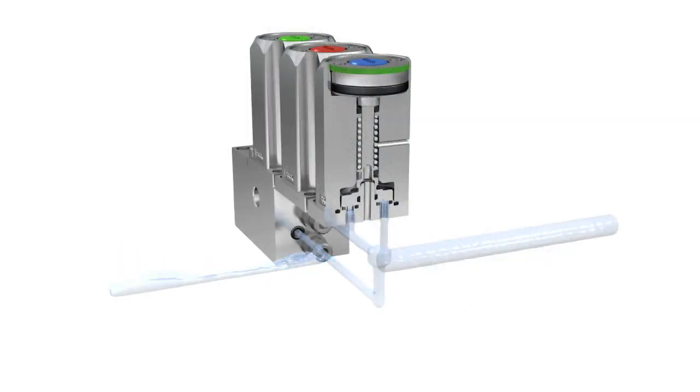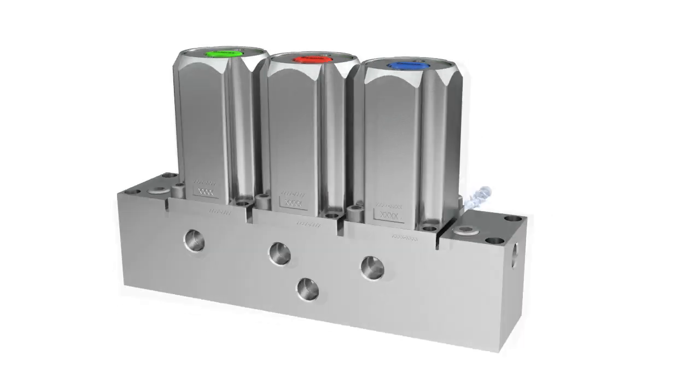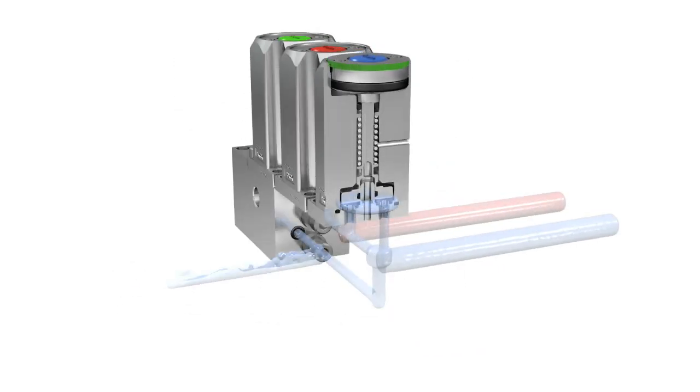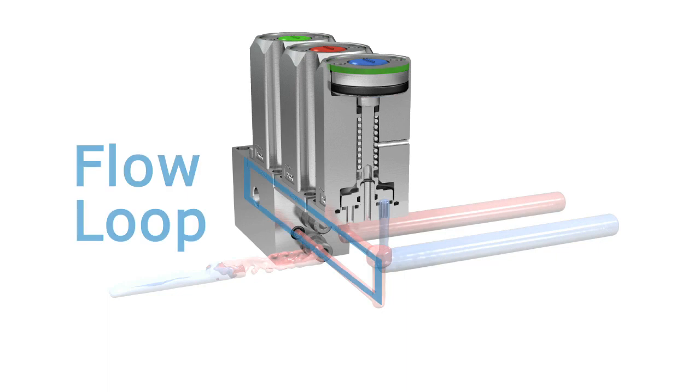We start out with the classic double block and bleed operation, but then we add our Swagelock innovation. One of these is the outlet flow loop that eliminates contaminating dead legs and ensures the same flow for every stream.